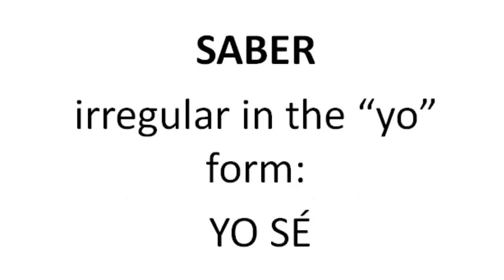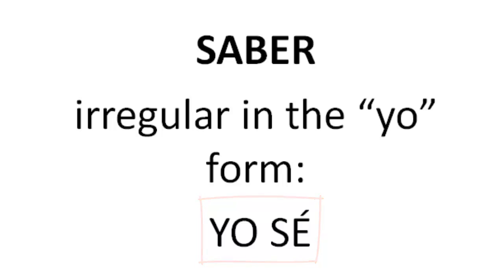We've got to remember that saber is irregular in the yo form. Yo sé is how you say I know. The rest of the conjugations follow the normal ER verb pattern: tú sabes, él sabe, nosotros sabemos, ella sabe, ellos saben.